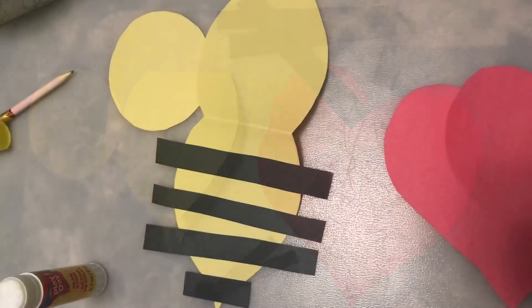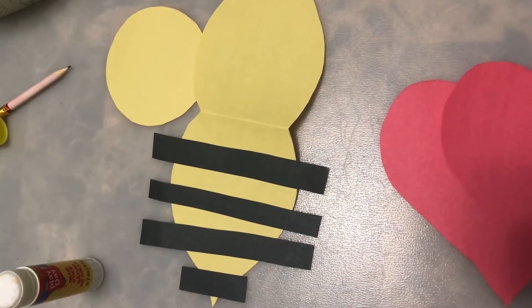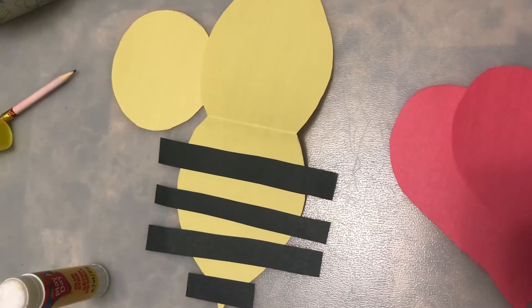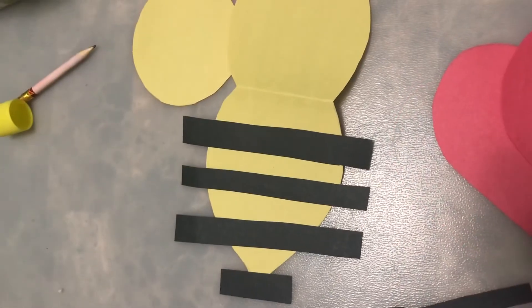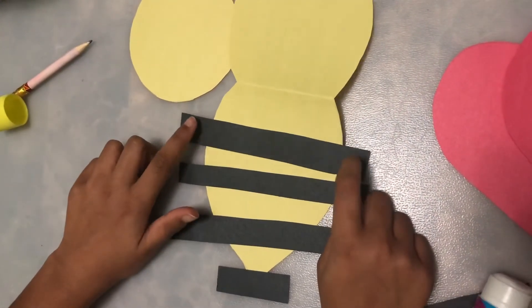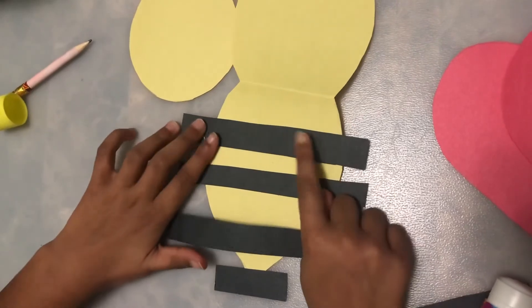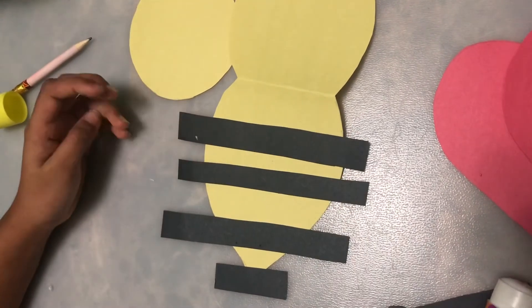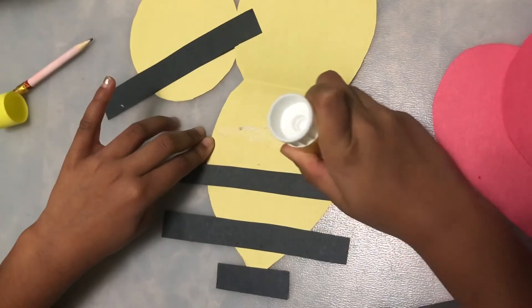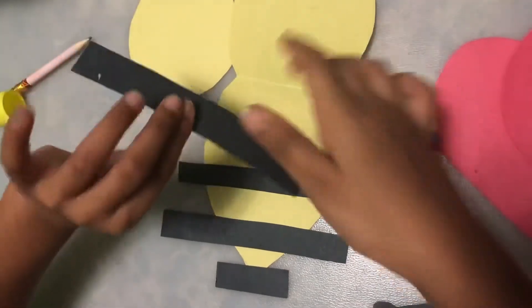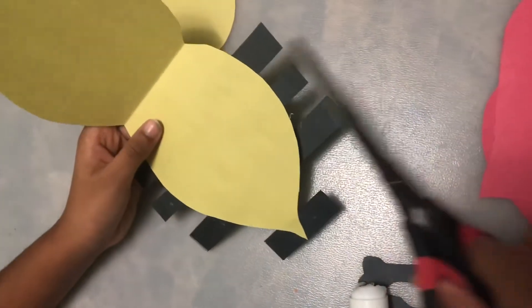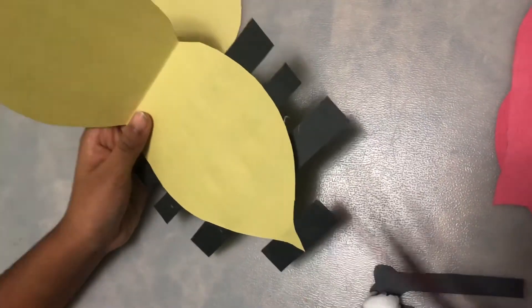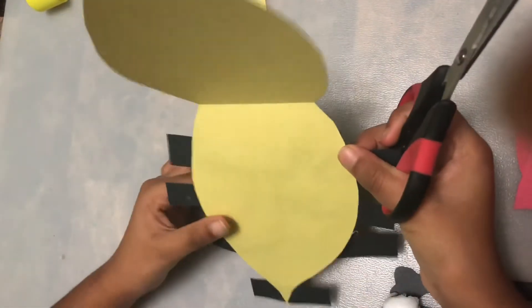Okay now we're gonna make our bee so first obviously we're gonna start with our body. So we're gonna start gluing on the stripes. Don't worry about the extra pieces, we can cut them at the end. So let's get started. You want to flip your body around and you want to cut extra pieces off.